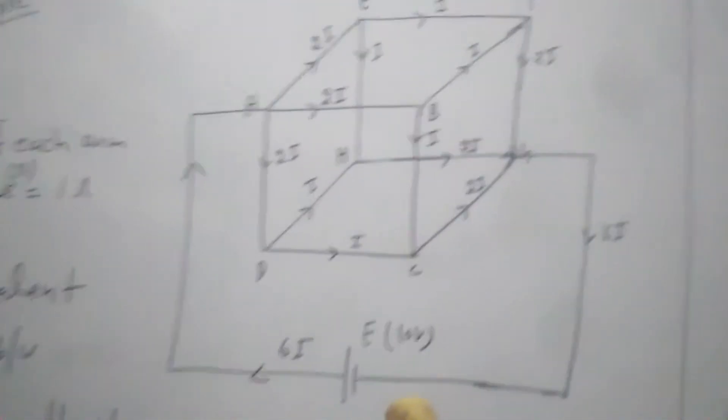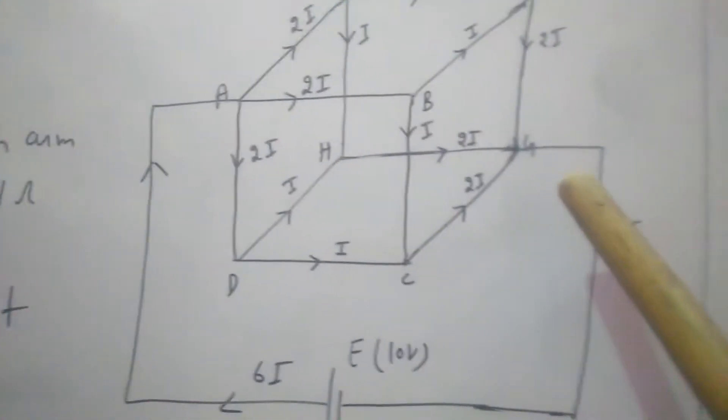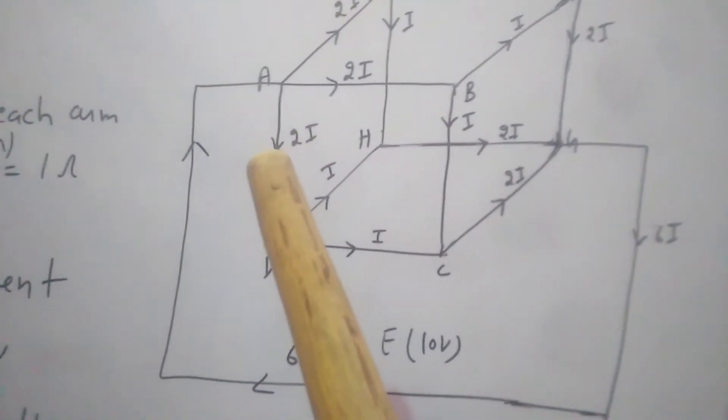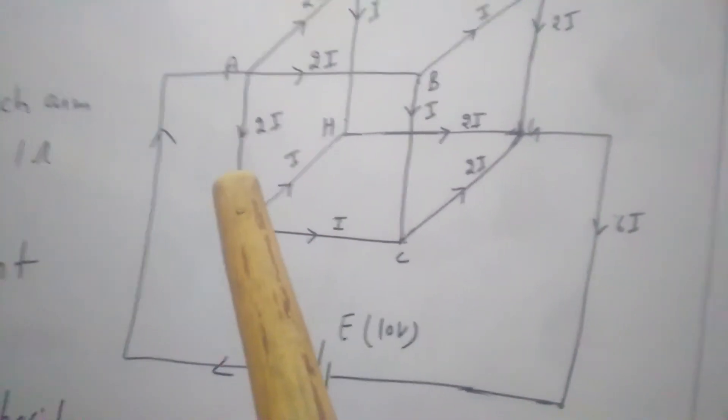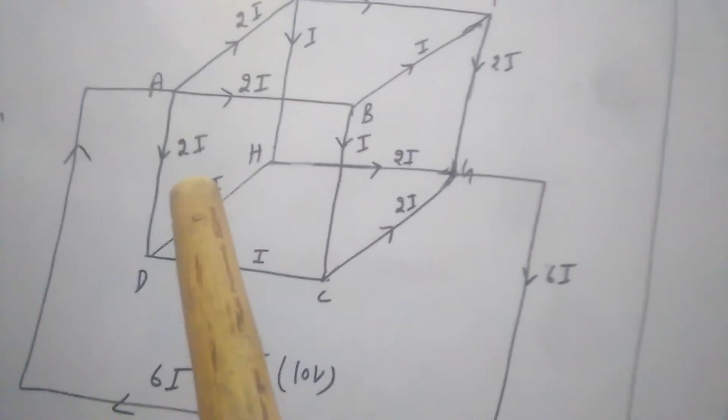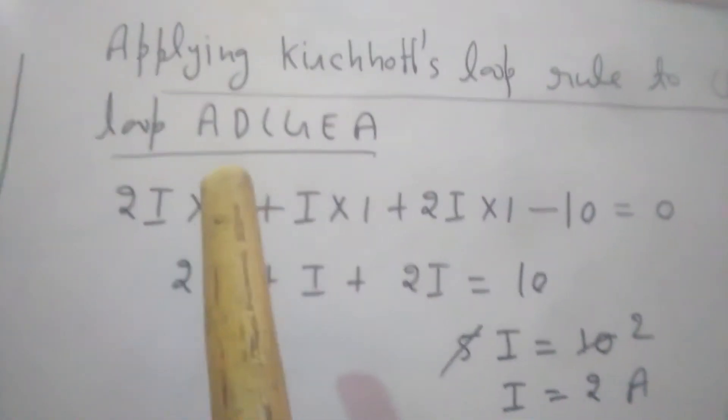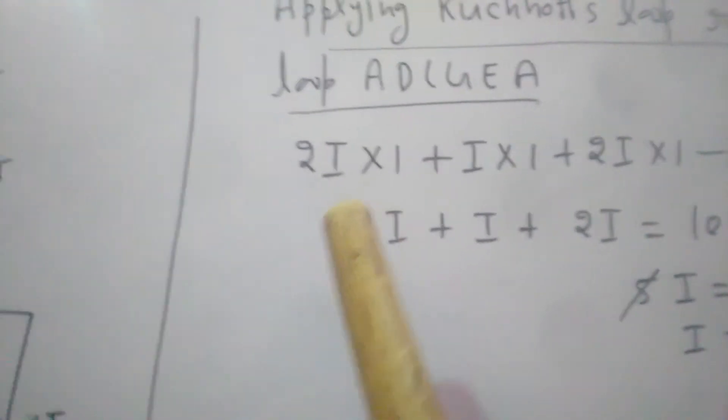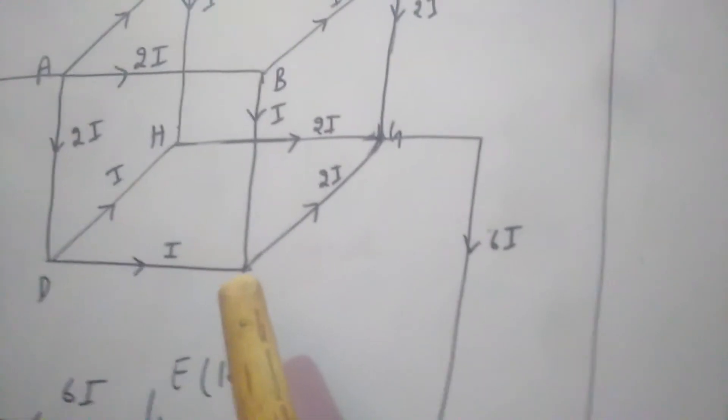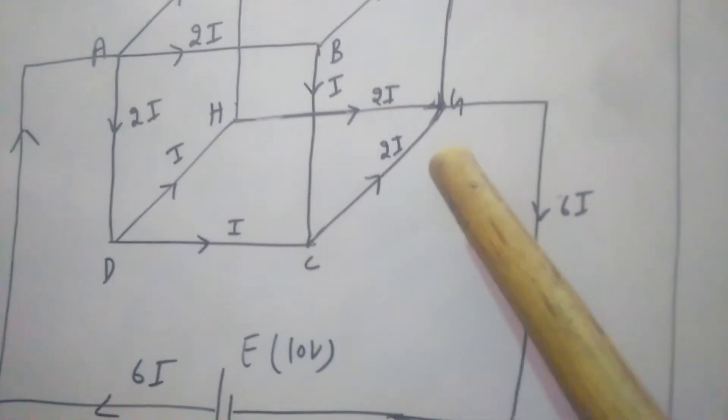Now we will solve using Kirchhoff's law. Apply Kirchhoff's law to this closed circuit - 2i into 1, positive because our direction and current direction are same. So when we apply Kirchhoff's law to closed loop ADCGE, first 2i into 1 when we start from A, then plus i into 1 because DC has resistance 1.